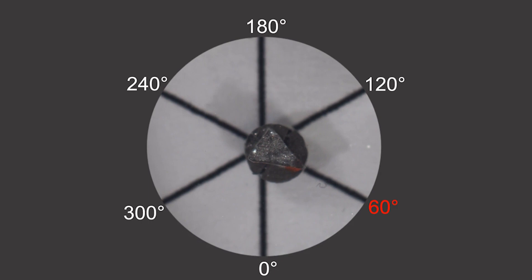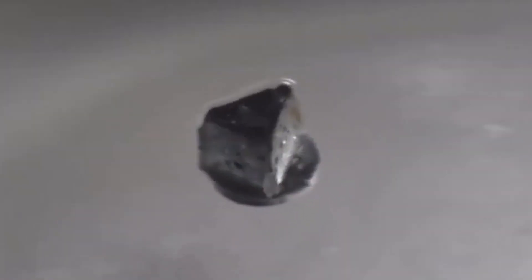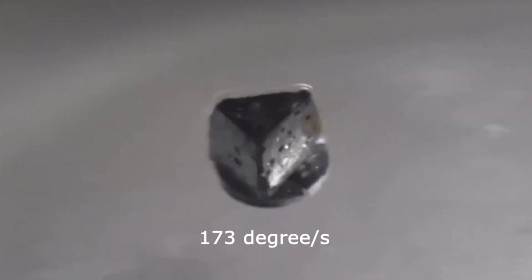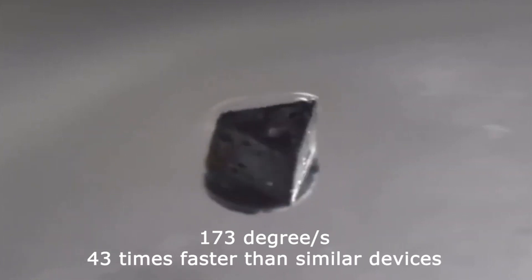Our robot's six degree of freedom orientation can be precisely controlled, and it can rotate up to 173 degrees per second, 43 times faster than similar devices.